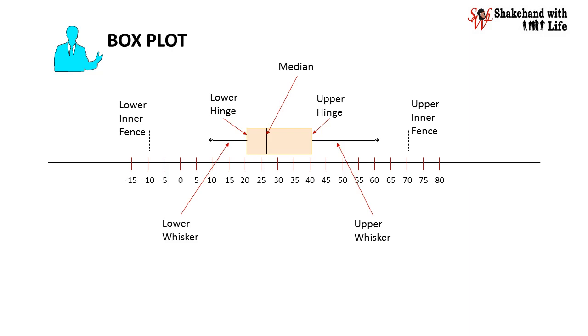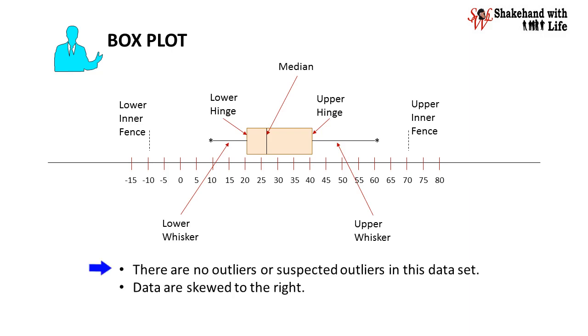From the box plot, it is clearly seen that there are no outliers or suspected outliers. The right-handed portion of the box plot is larger than the left-handed portion and right-handed whisker is larger than the left-handed whisker. This implies the data are asymmetric and there is right-handed skewness in the given data.